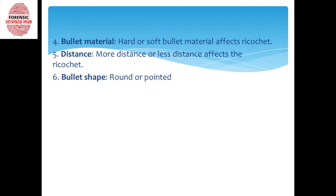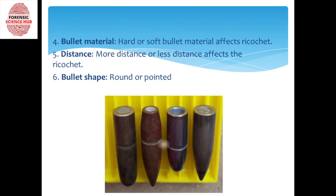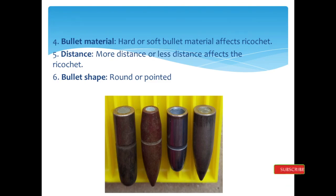Next comes bullet material. The bullet itself can be made of hard or soft material, and bullet density also affects ricochet. If the bullet material is hard, there are increased chances that it will penetrate inside the target. But if it is made of soft material, there are more chances that the bullet is going to ricochet off.